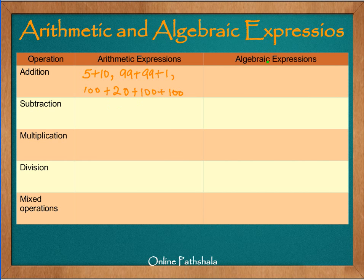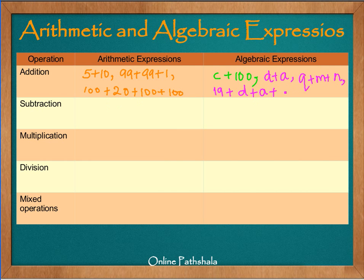How does an algebraic expression involving addition look like? We can write c plus 100 — this is an algebraic expression. Or we can write b plus a, which is just two variables. Or q plus m plus n, which is addition of three variables. Or we can also write 19 plus b plus a plus 0. You can see the difference between algebraic and arithmetic expressions clearly here.